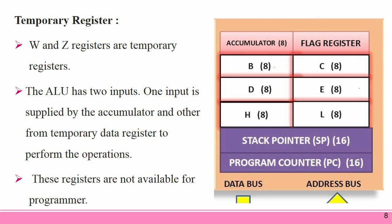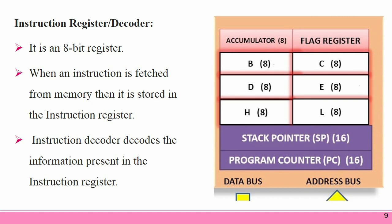Instruction Register and Decoder: The processor first fetches the opcode of an instruction from memory and stores it in the instruction register. It is then sent to the instruction decoder. The instruction decoder decodes it and accordingly gives the timing and control signals which control the register, the data buffer, ALU, and external peripheral signals depending on the nature of the instruction.